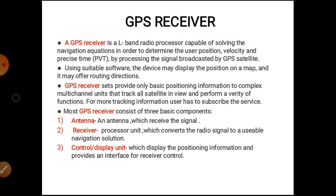Most GPS receivers consist of three basic components. First, antenna: an antenna which receives the signals. Second, receiver: a processor unit which converts the radio signal to a usable navigation solution. And third, control or display unit: which displays the positioning information and provides the interface for receiver control.